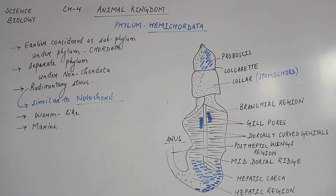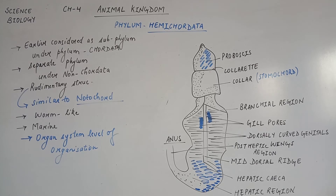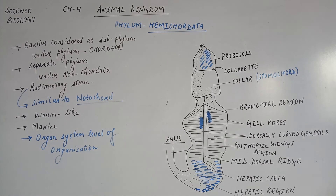In phylum Hemichordata, all the worm-like structures have been placed, and these are marine organisms found in sea water. In phylum Hemichordata there is an Organ System level of organization, because as phylums progress the organisms become more complex. So in complex organisms there is Organ System level of organization.